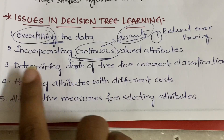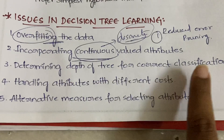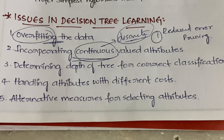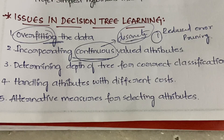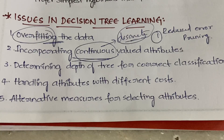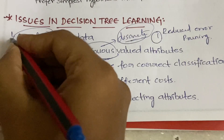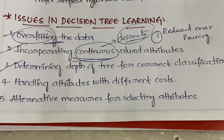The third issue is determining the depth of the tree for correct classification. You cannot determine at the beginning of the algorithm at what level — level zero, one, two, or three — you will get the correct classification. As you keep constructing the tree you need to keep increasing the levels.